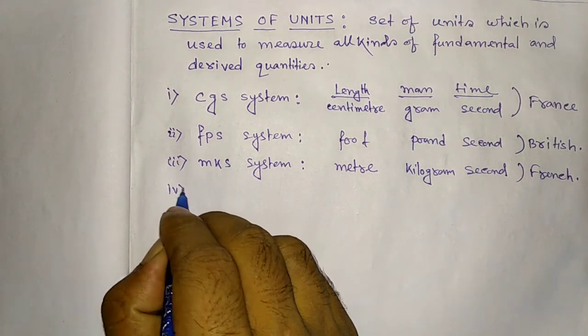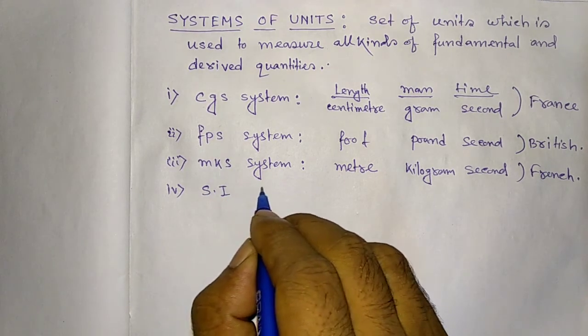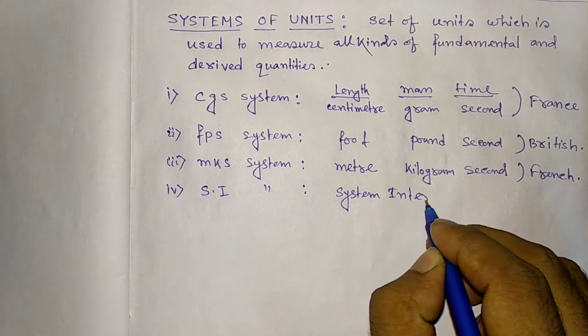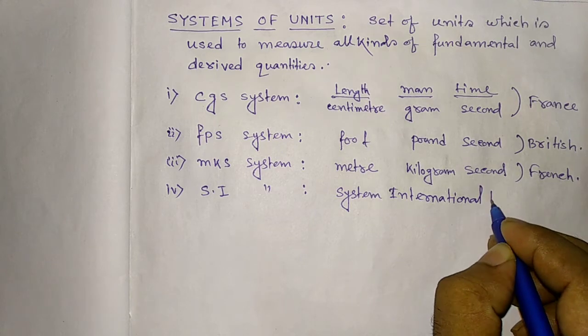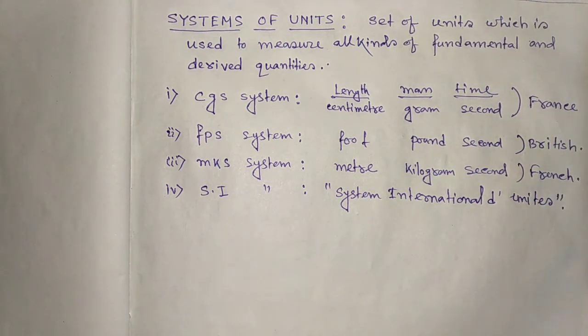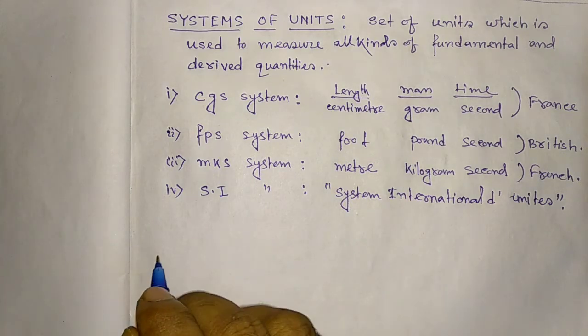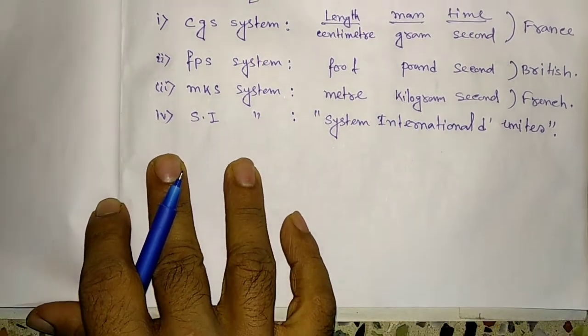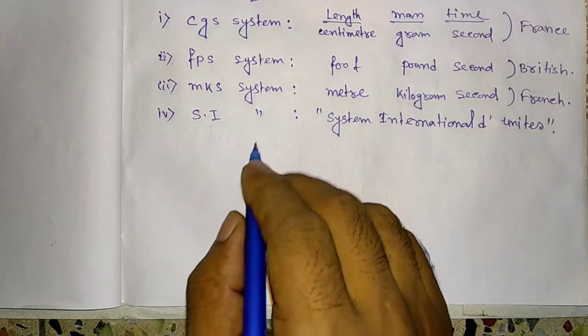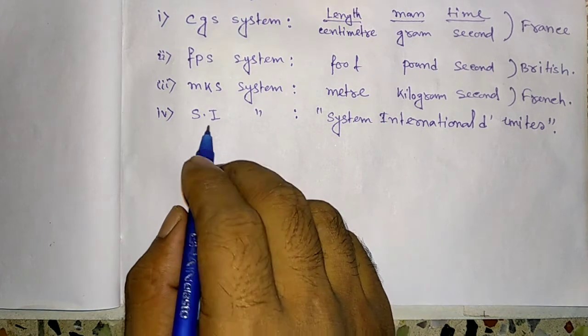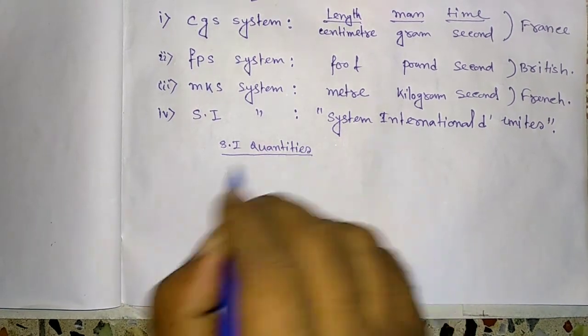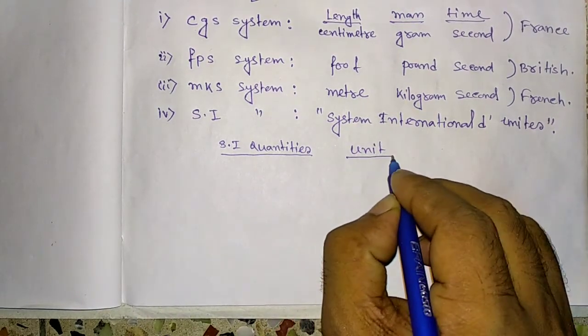Now, fourth system of unit is SI system. So it is system international d'unités. In that system, in SI system, it contains so many quantities. Mainly, there are seven quantities. So, basic SI quantities are number one. SI quantities, unit and its symbol.